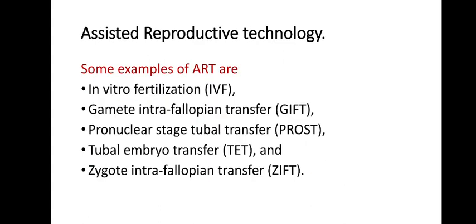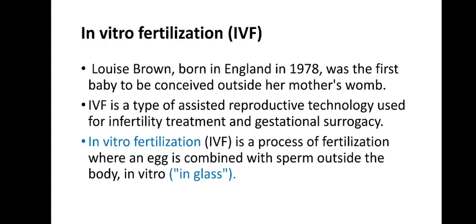Some examples of ART are IVF, GIFT, PROST, TET, and ZIFT. We will be discussing IVF, GIFT, and ZIFT. Regarding in vitro fertilization: Louise Brown, born in England in 1978, was the first baby conceived using this technique outside the mother's womb. IVF is a type of assisted reproductive technology used for infertility treatment and gestational surrogacy — where after fertilization the baby grows not in the actual mother's womb but is implanted in someone else's uterus.